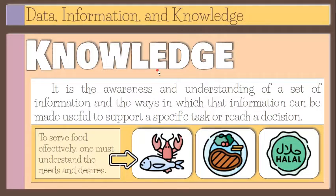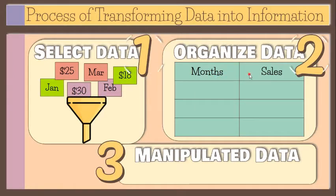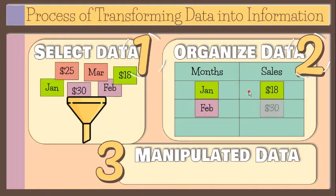We organize or process data mentally or manually, and sometimes we use a computer. The process of transforming data into information starts by selecting data, then organizing it, and finally manipulating the data.